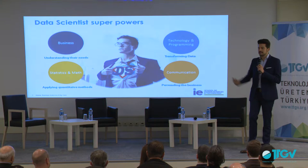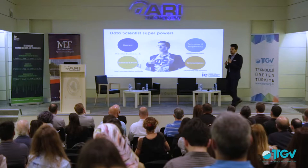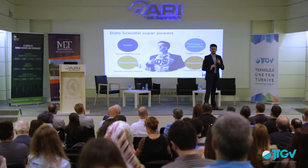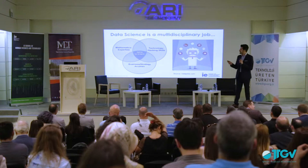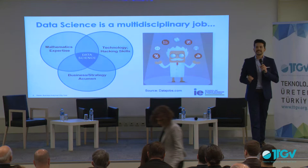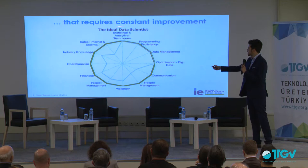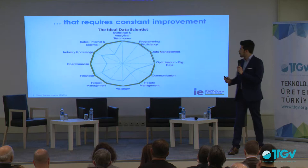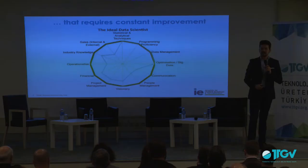Finally, you have communication. It's very important to understand how to communicate effectively the insights that you are finding in your information. Data science is a multidisciplinary job which combines different areas — mathematics, technology, but also business and strategy acumen. You need to keep in mind that it's a role that requires constant improvement. The ideal data scientist touches all these different areas: not just statistics and programming, but also optimization, communication, people management, operations, industry knowledge, and sales, among many other skills. It's a quite complete, 360-degree profile.